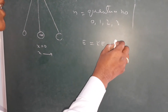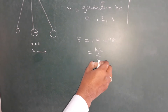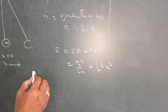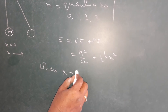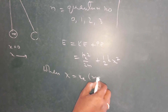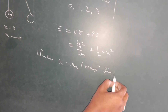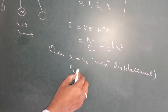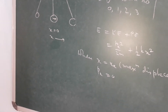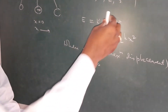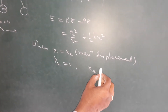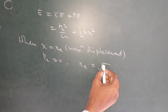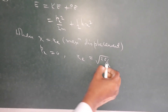The total energy of the system is kinetic plus potential energy: E = px²/2m + ½kx². When the particle is at maximum displacement xₑ, px = 0, meaning velocity is zero. Substituting, we get the maximum displacement xₑ = √(2E/k).